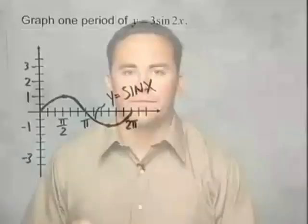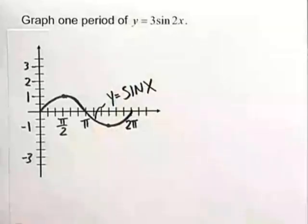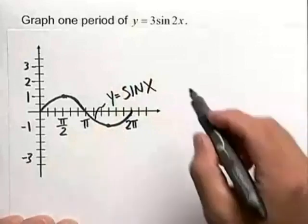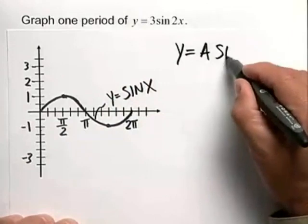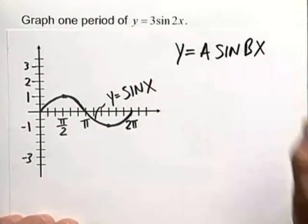Let's graph a trigonometric function. We want to graph y equals 3 sine of 2x, and this is the form y equals a times the sine of bx.